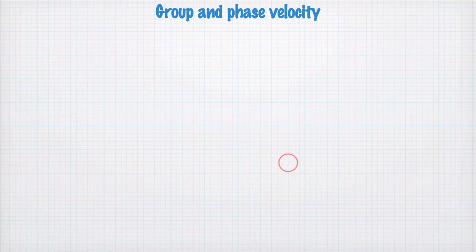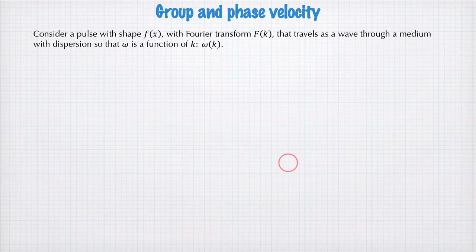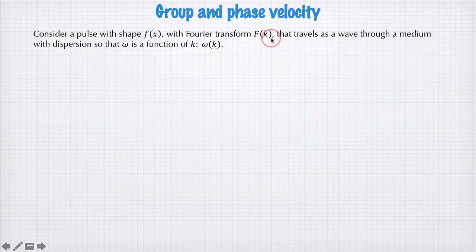Let's derive the group and phase velocity. We're going to consider a pulse with some shape f, and the Fourier transform capital F, and it's traveling through a medium of dispersion, so that omega is some function of k, that we write omega like this.